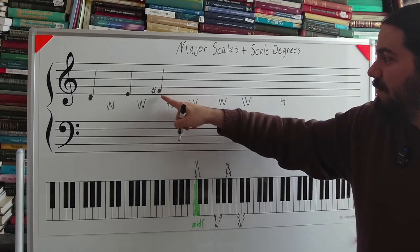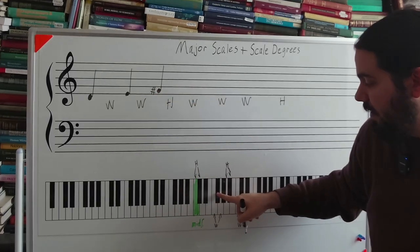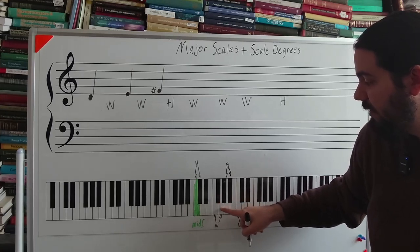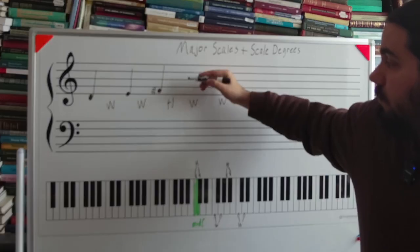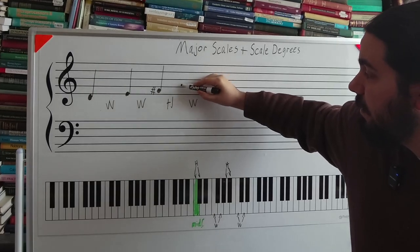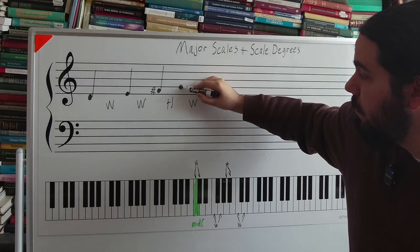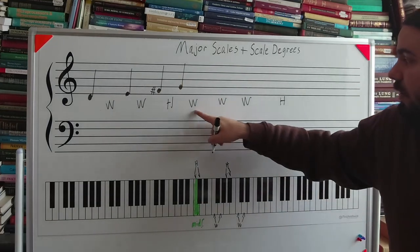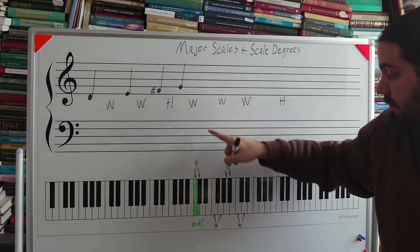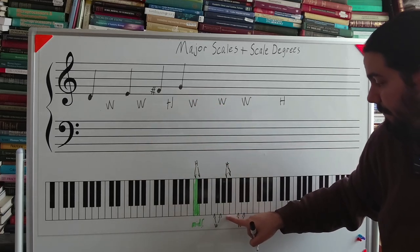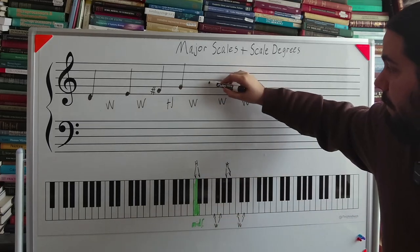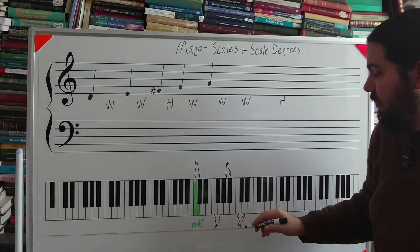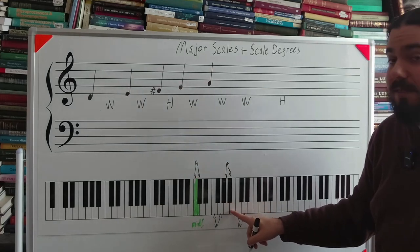So then we need a half step up from F sharp. The note that is immediately touching F sharp is actually G. And then we need a whole step up from G, which is A. Then we need a whole step up from A, which is B.